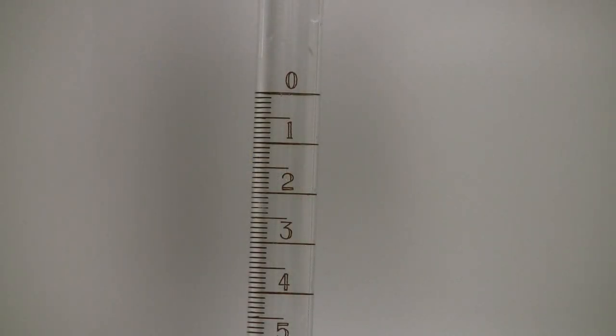Graduated pipettes are marked every .1 milliliter, which means that they can be used to measure liquid volumes to the hundredths place. Notice that the markings start at zero at the top and increase down the length of the pipette.